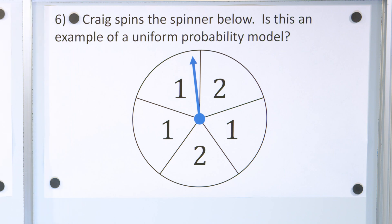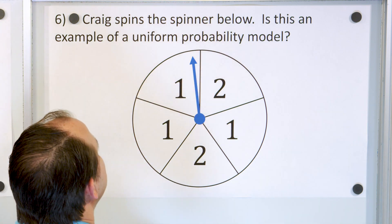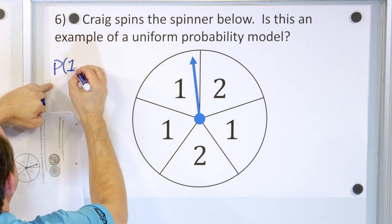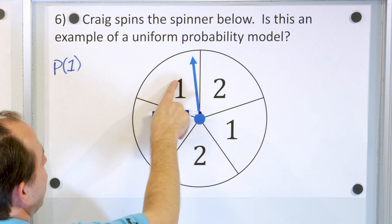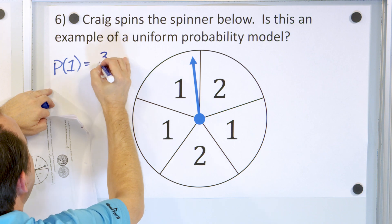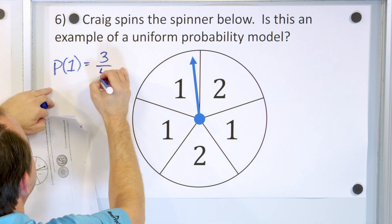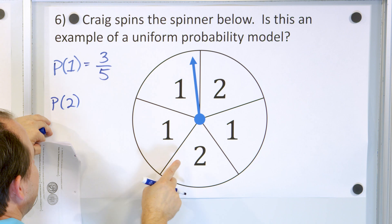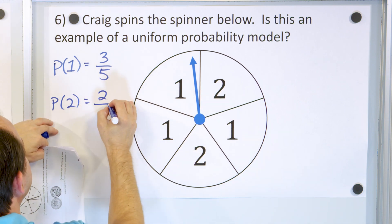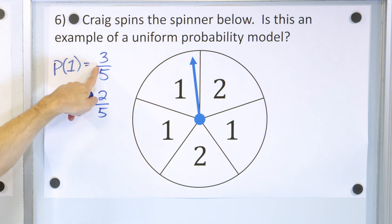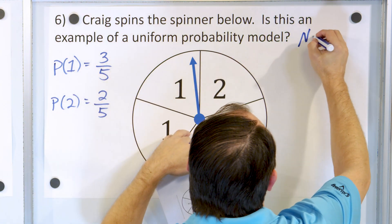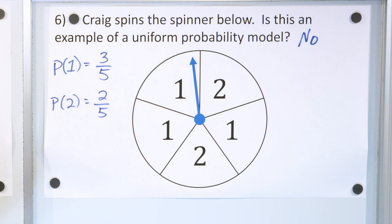Problem 6: Craig spins the spinner below. Is this an example of a Uniform Probability Model? The probability of landing on a position with number one is three possible outcomes out of five total positions — three fifths. The probability of landing on a two is only two outcomes out of five — two fifths. The probability of landing on a one is higher than landing on a two; they are not equal. So no, this is not a Uniform Probability Model. It is a Non-Uniform Probability Model.